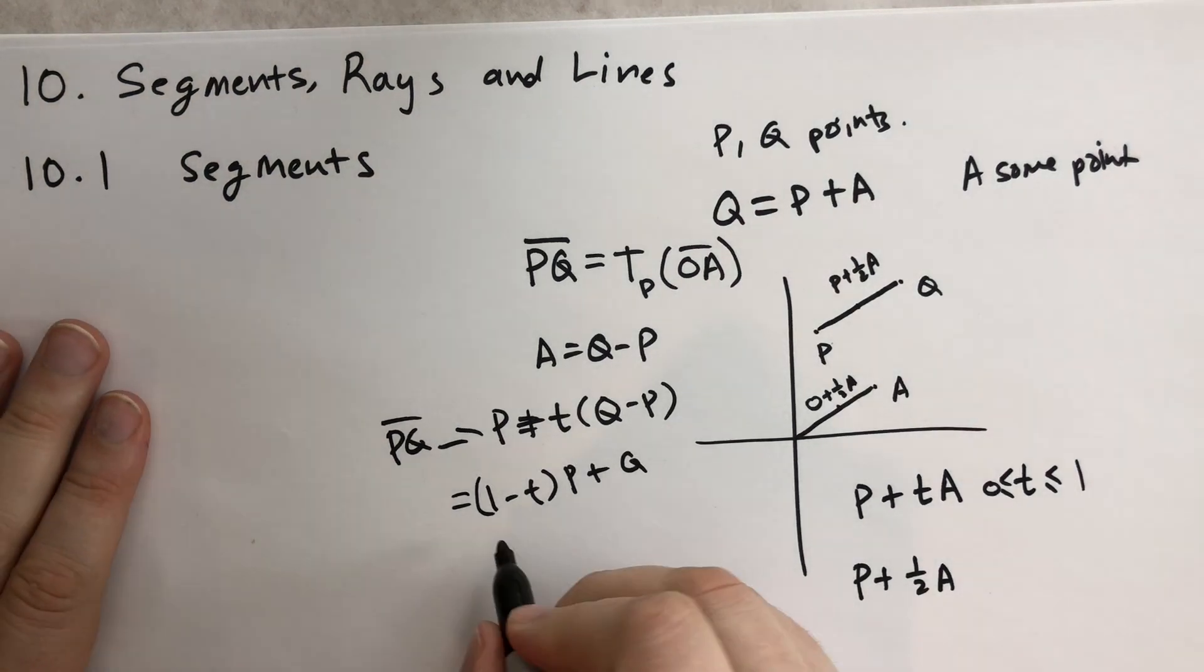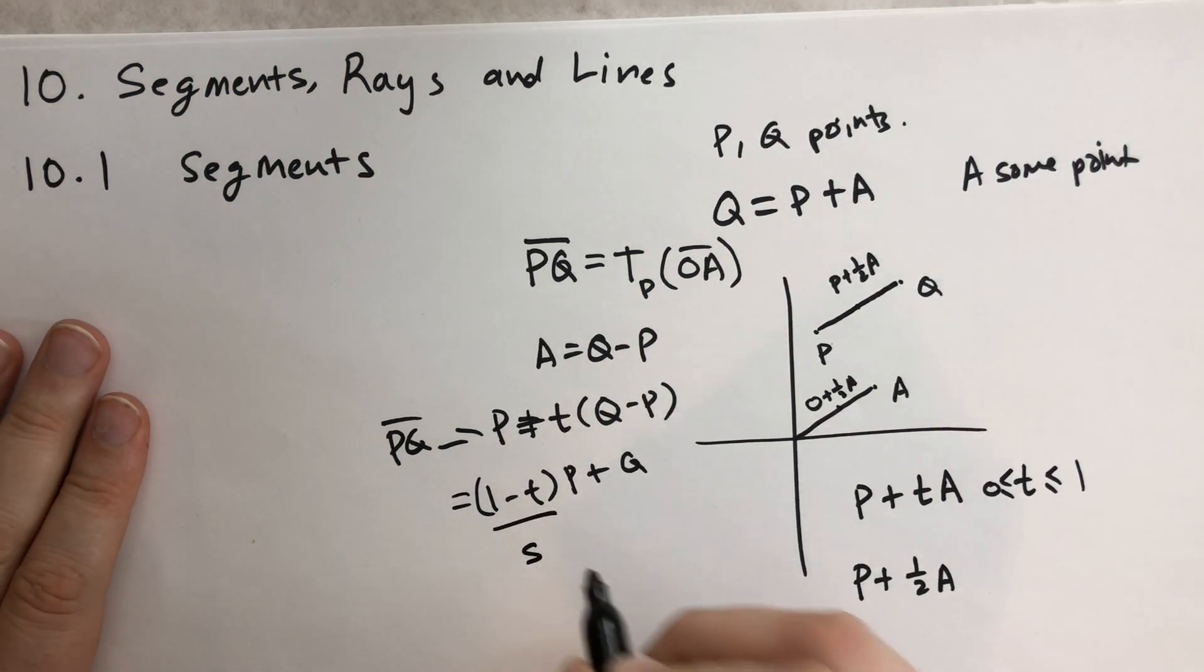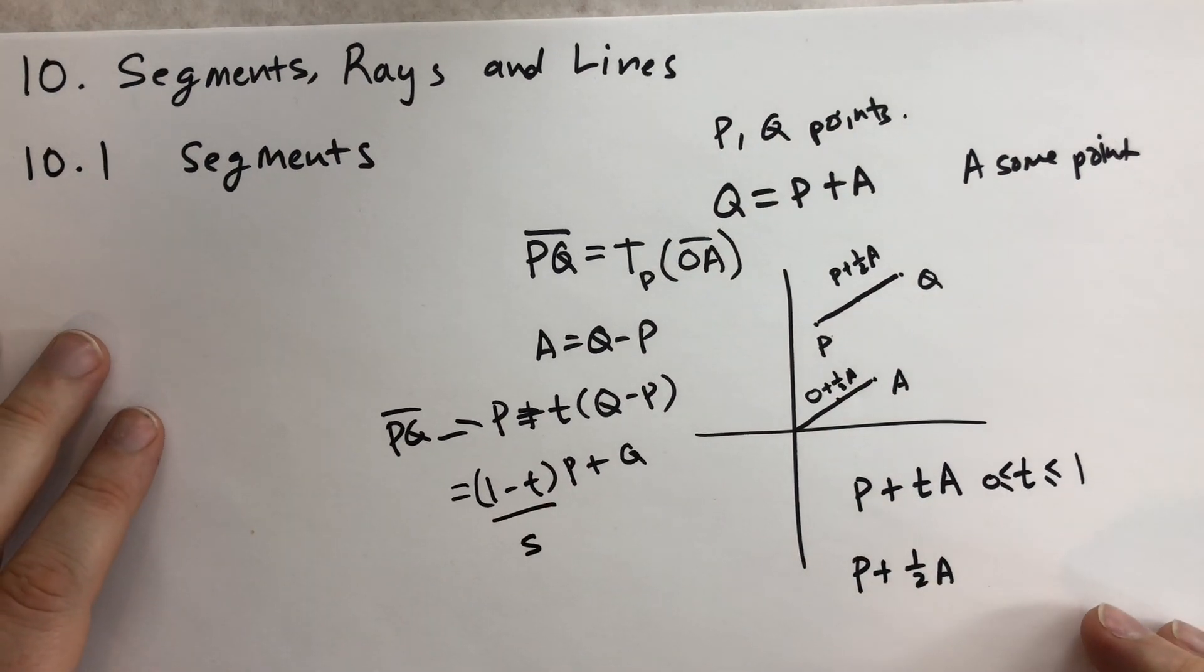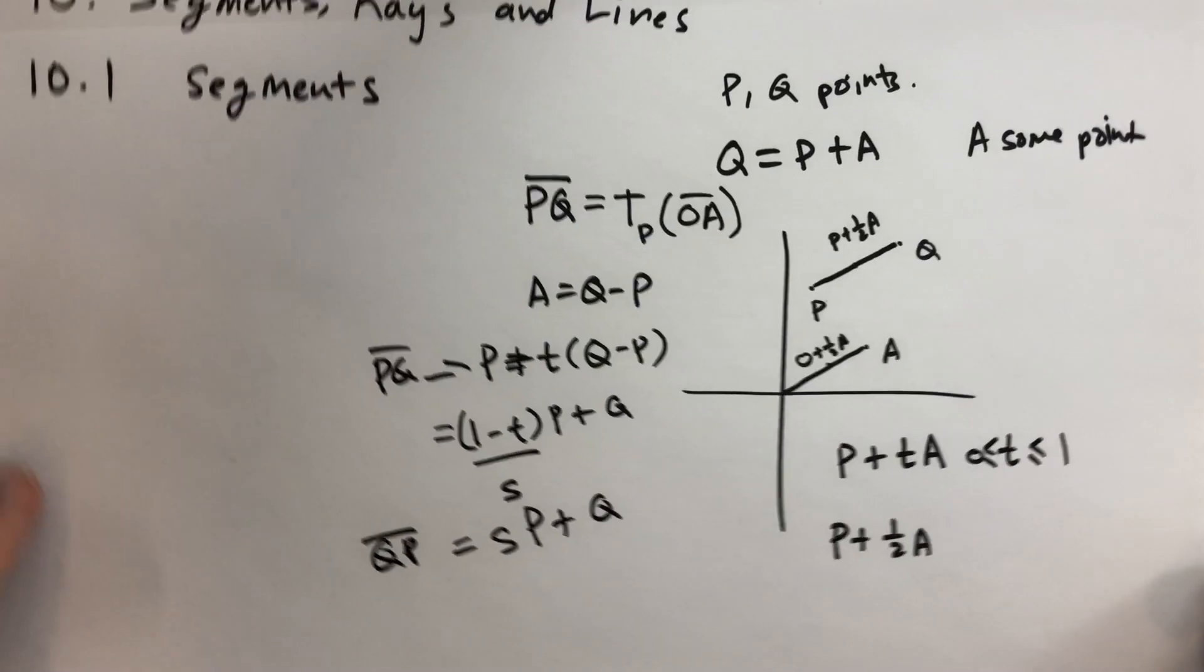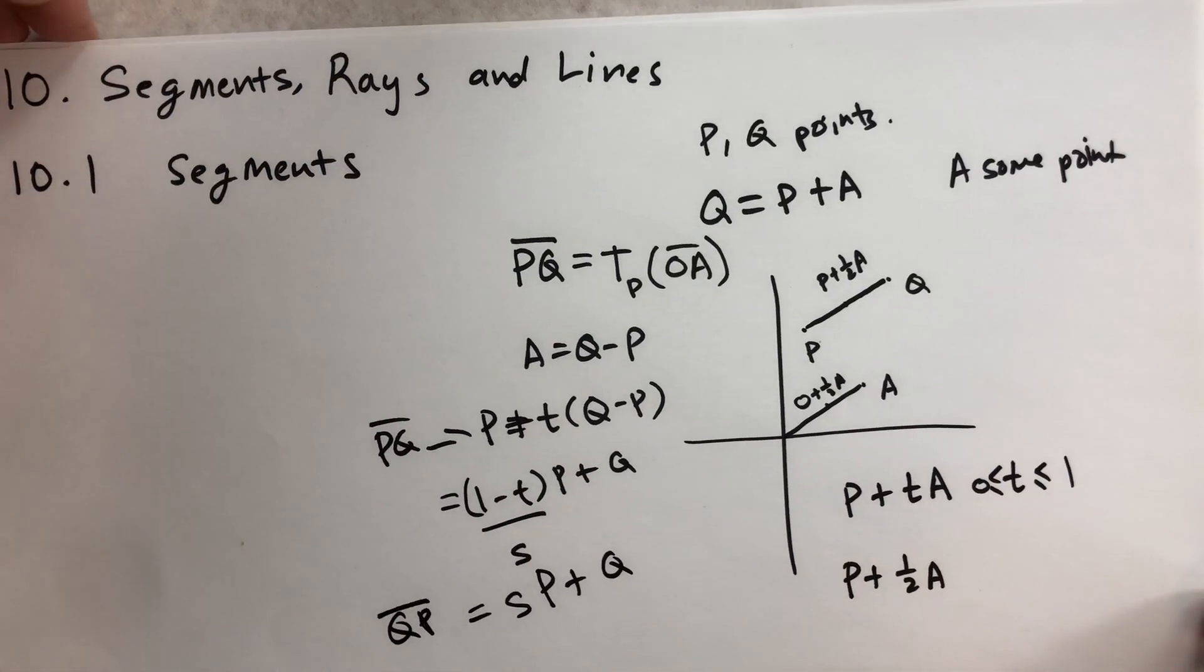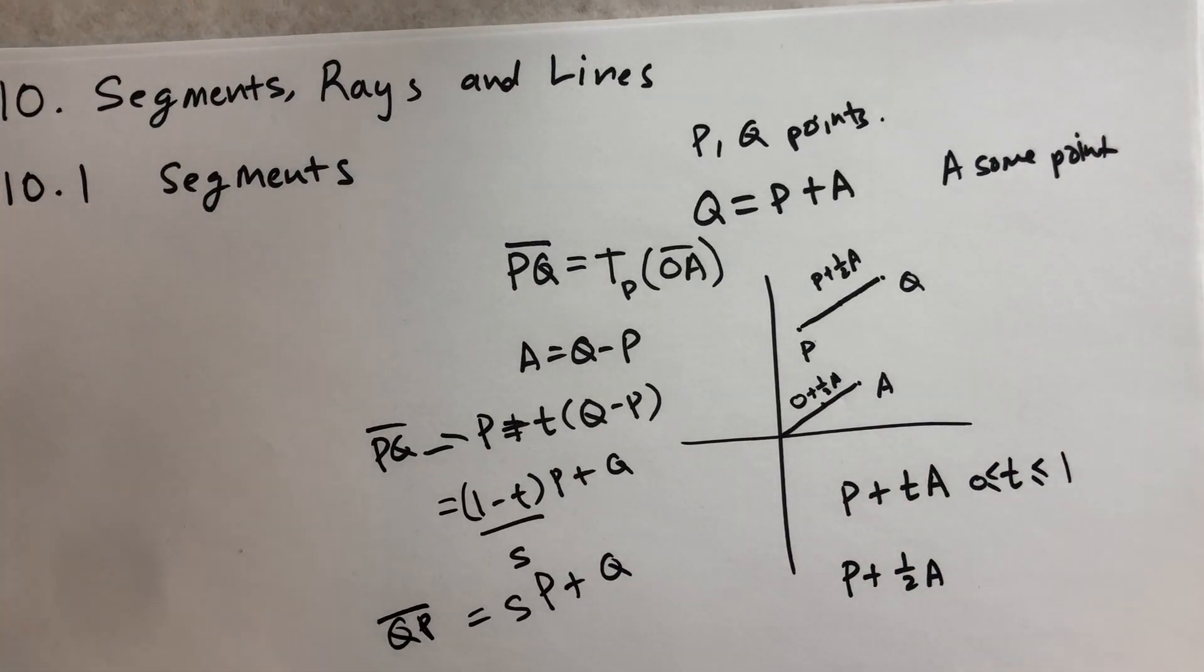You can see that 1 minus T itself is a real number, we can call that real S. So the line segment equals SP plus TQ. You can think of that as a line segment QP. And so PQ and QP are the same. Not terribly complicated math, he's just dancing around with the numbers.